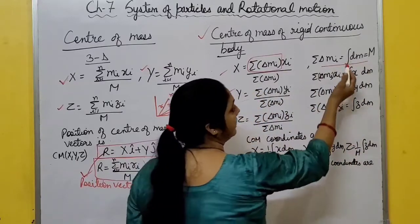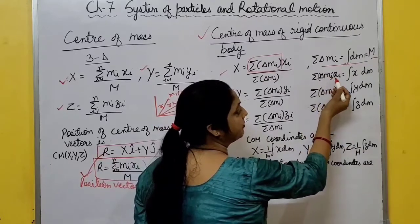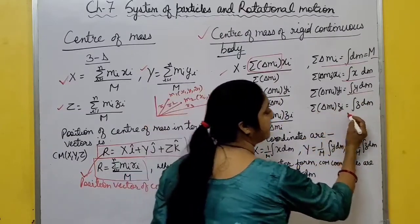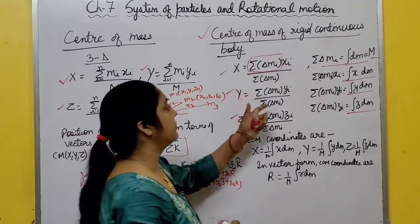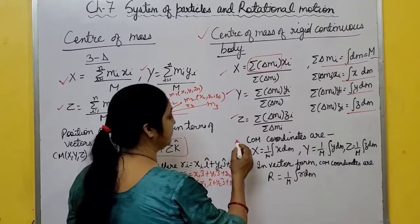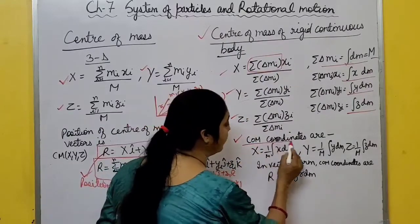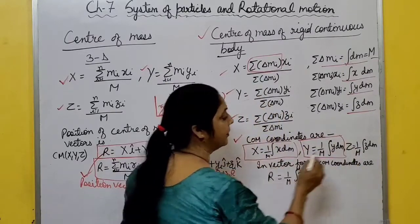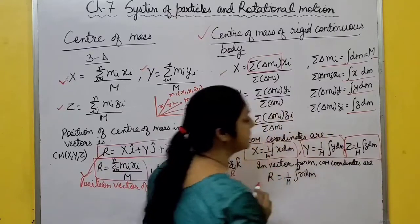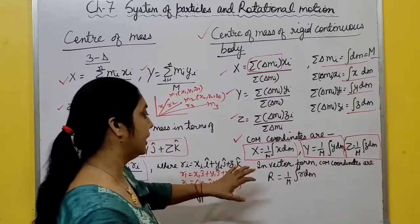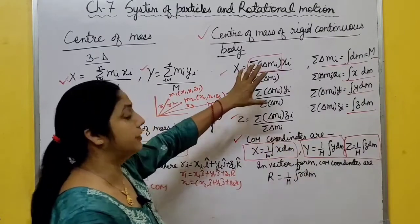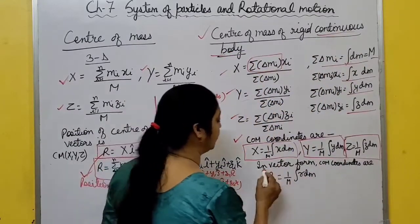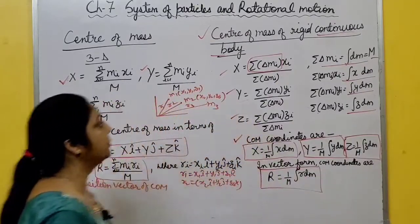So for a continuous body, center of mass coordinates are: X = (1/M)∫x dm, Y = (1/M)∫y dm, Z = (1/M)∫z dm. These are center of mass coordinates when mass is continuously distributed. In vector form: R = (1/M)∫r dm. This covers all about center of mass.